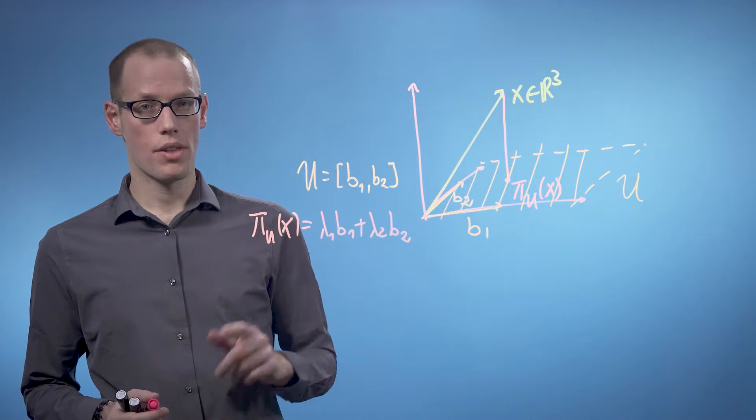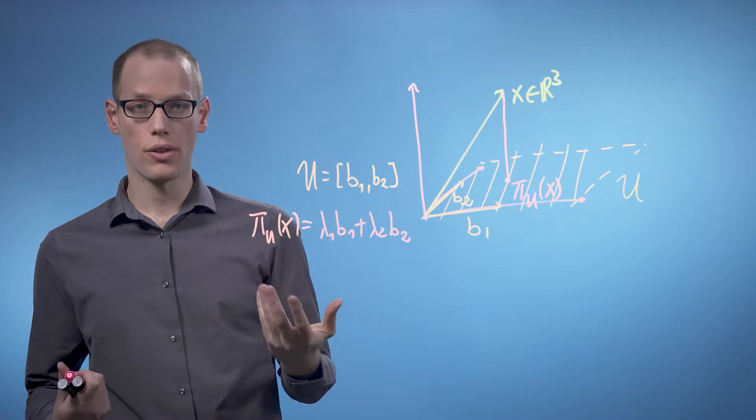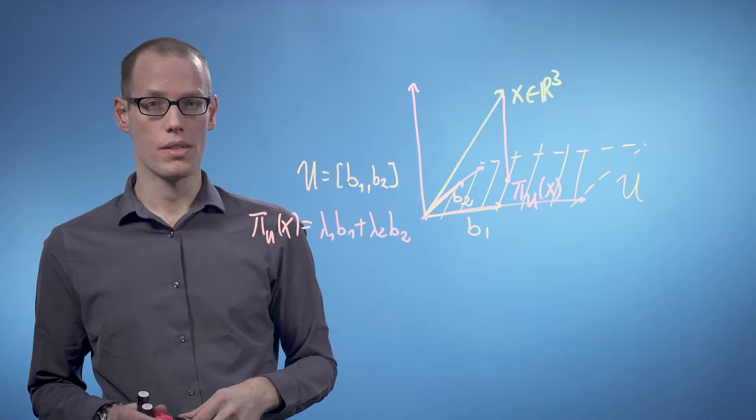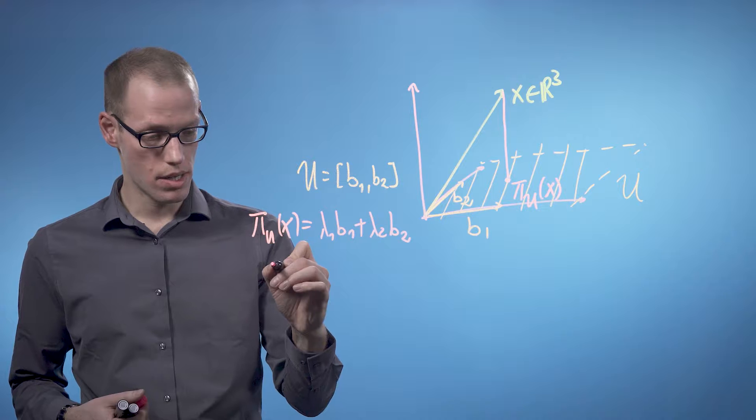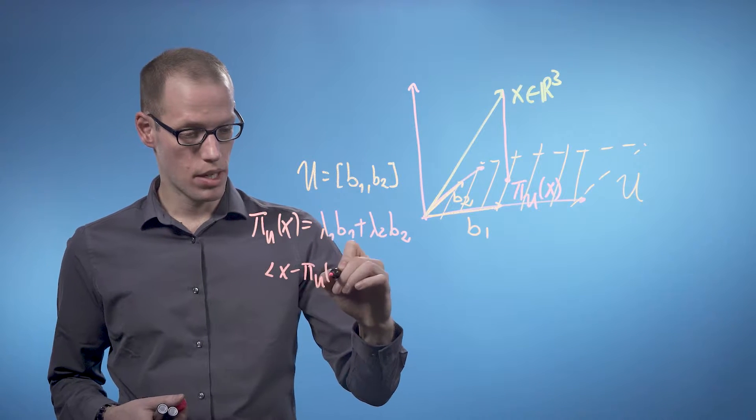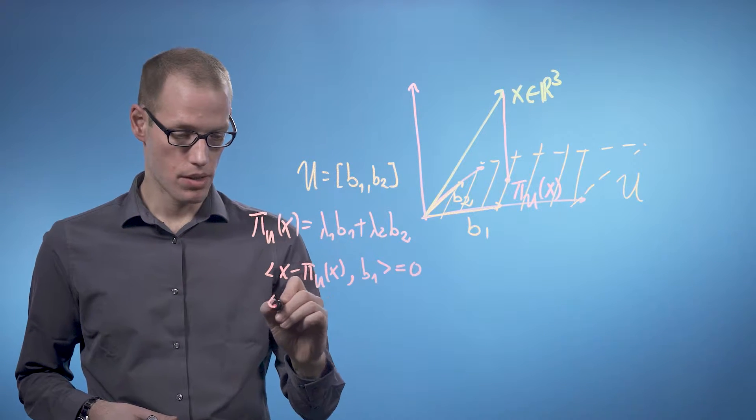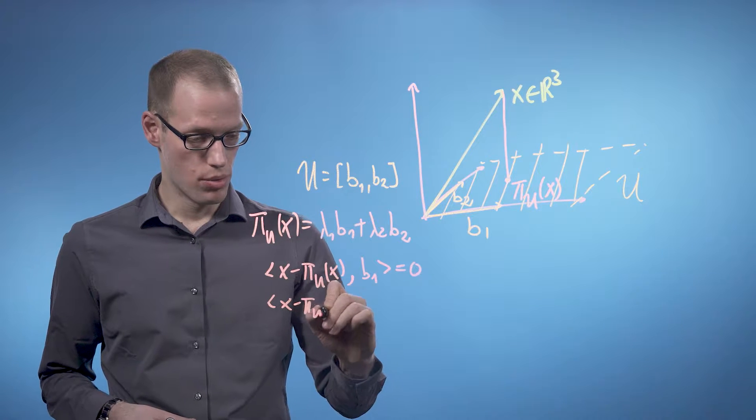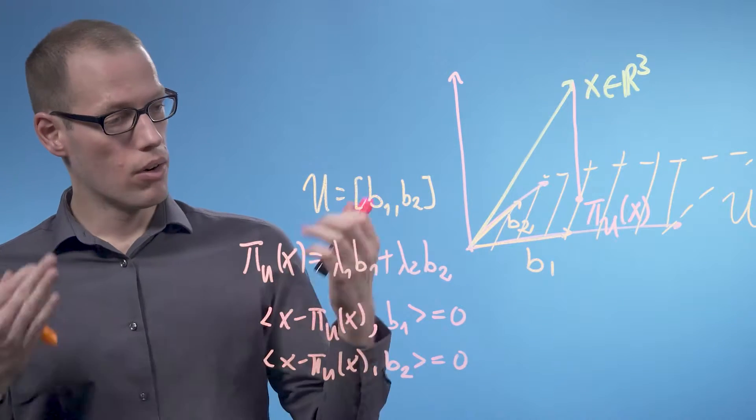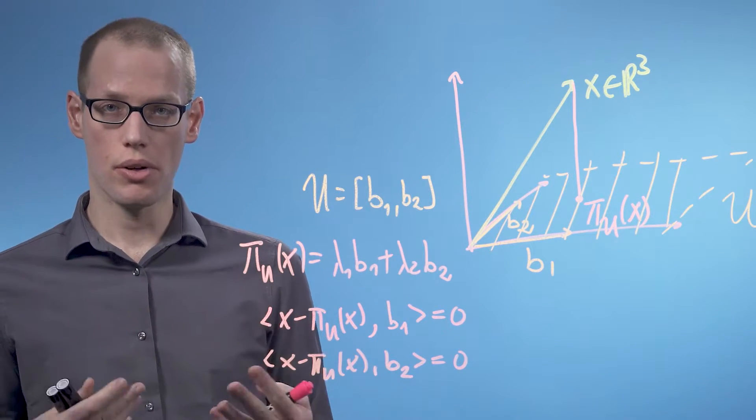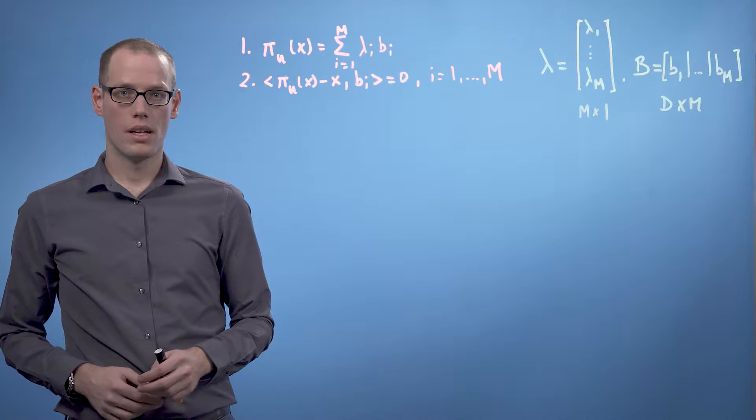And the second property is that the difference vector x minus π_u(x) is orthogonal to u, which means it's orthogonal to all basis vectors of u. And we can now use the inner product for this, and we can write that x minus π_u(x) inner product with b_1 must be 0, and the same is true for b_2. But now let's formulate our intuition for the general case where x is a d-dimensional vector, and we're going to look at an m-dimensional subspace u.